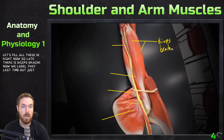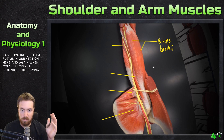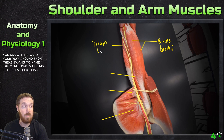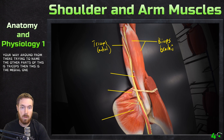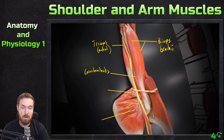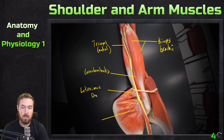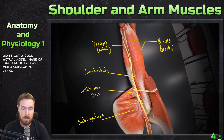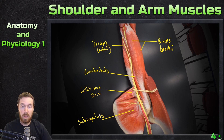When you're trying to remember these, start with a muscle you know and then work your way around. So this is triceps medial head, right here is the coracobrachialis — don't confuse that with the brachialis — it goes to the coracoid process. Then right here is the connection to the latissimus dorsi, and right here is the subscapularis. Those are the main ones of the arm and shoulder.